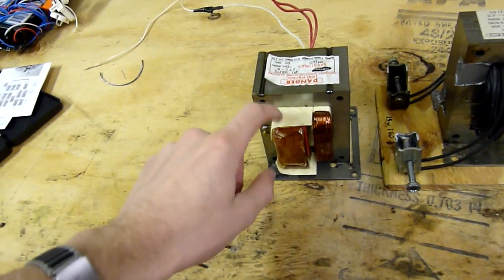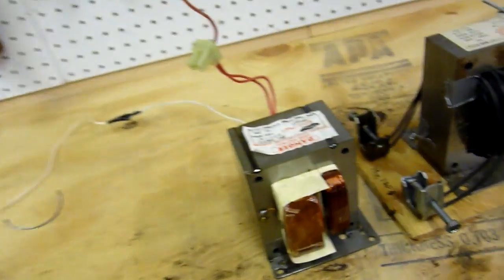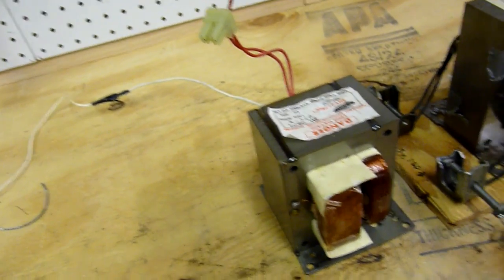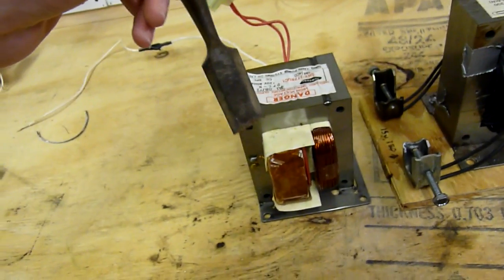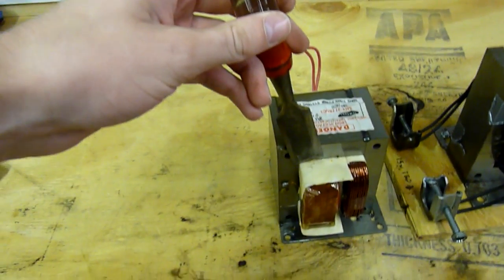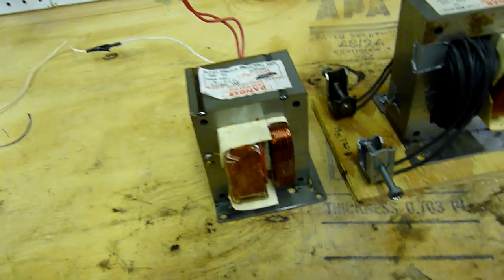Basically I chiseled off the secondary. The best way to get those windings off is with a chisel. You simply just put it up against the windings, smack it a few times, and you'll cut right through all the copper and then you can push it out.